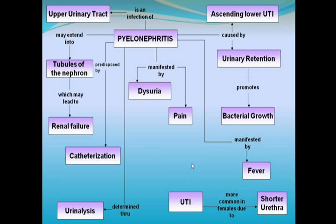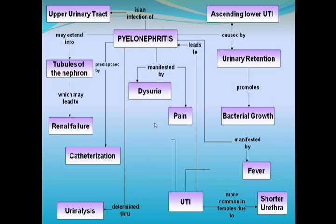An infection occurs when bacteria enters the urine and begins to grow. The infection usually starts at the opening of the urethra, where the urine is excreted from the body, and moves upward into the bladder where they can grow and cause an infection. If they reach the kidney, they can cause a kidney infection called pyelonephritis, which can become a serious condition if not treated promptly.